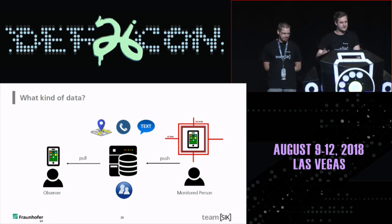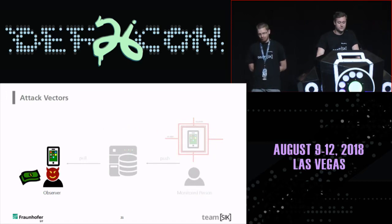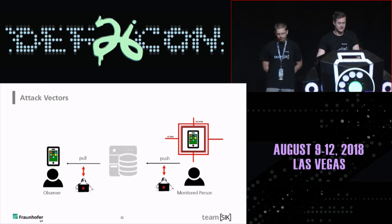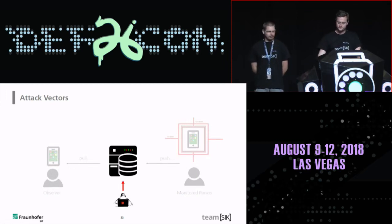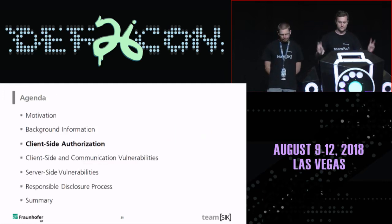The attack vectors: first, can we upgrade premium features for free? Then the two communication channels — can we do a man-in-the-middle and how was the protocol implemented? And the last attack vector is the backend itself. We will now talk about all three stages, starting with client-side authorization.